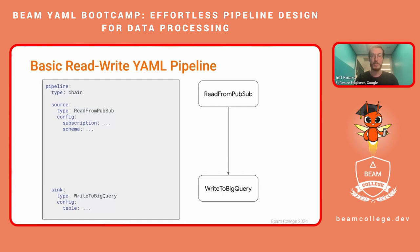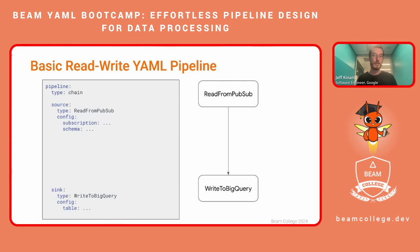A basic reading and writing YAML pipeline — in this example, we're going to be reading from PubSub and writing to BigQuery. Every pipeline starts with the pipeline tag at the very top. From there, if you specify chain, that means every transform you define in your pipeline will be chained one after the other. One of our syntactic sugars is defining a source and a sink — this is not required, but it makes it more organized when writing your pipeline. In this case, our source is of type read from PubSub, and with any transform, you will have a config with your input parameters. For read from PubSub, that might be your subscription and then the schema.